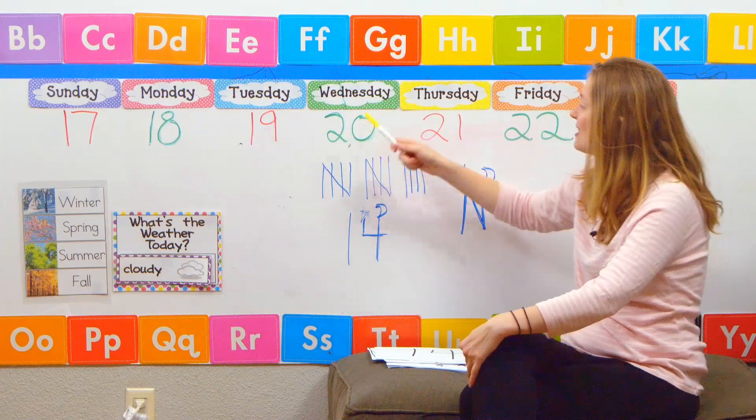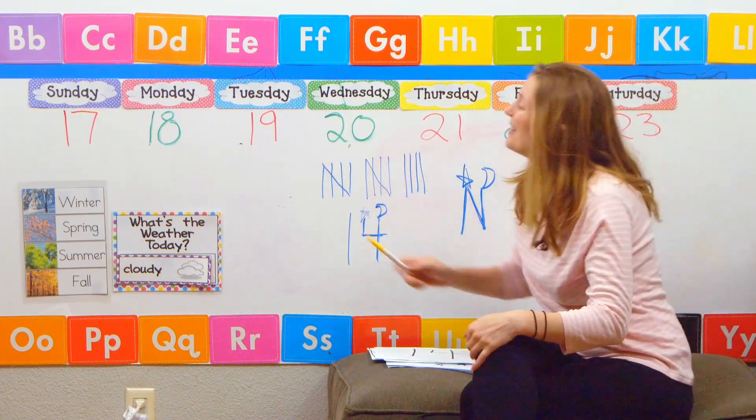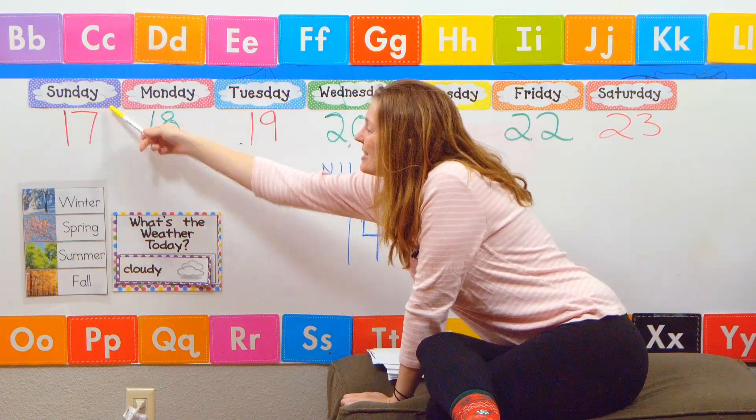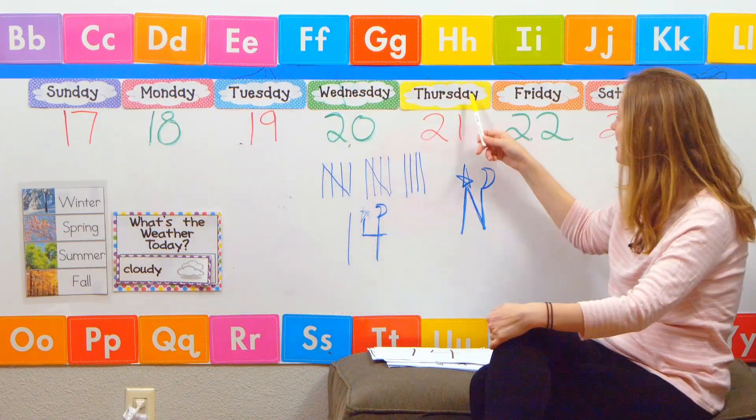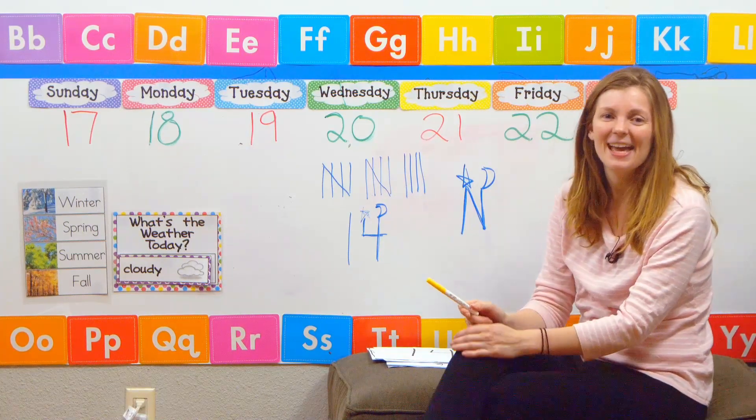Sunday, Monday, Tuesday, Wednesday, Thursday, Friday, Saturday, then we start again. Sunday, Monday, Tuesday, Wednesday, Thursday, Friday, Saturday, then we say the end.